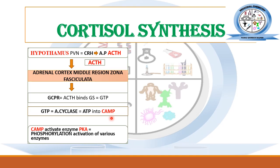So we have seen that the basic precursor for the release of cortisol from the zona fasciculata of the adrenal cortex is adrenocorticotropic hormone, which is released in response to corticotropin-releasing hormone. Now let's look at the different pathway mechanism by which cortisol is synthesized from cholesterol.